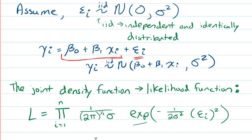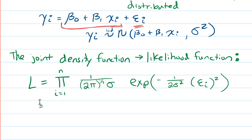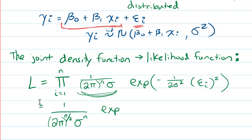Just in case you're not familiar with this notation, exp is basically e to the power of negative 1 over 2σ² times εᵢ squared — exp is just a different notation for writing e to the power of. Now, the outer piece doesn't involve i, so when I take the product, I get 1 over (2π)^(n/2) times σⁿ, times exp of a sum, using our properties of exponents.